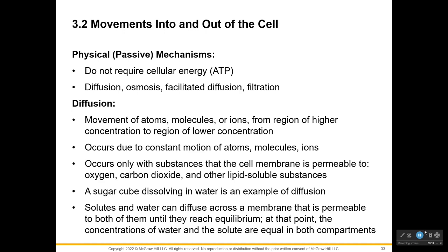Some stuff does go through, and it goes through using passive transport. When you hear passive, there is no required energy. The energy molecule we learned about is ATP, so we don't need the mitochondria for these processes, which include diffusion, osmosis, facilitated diffusion, and filtration.